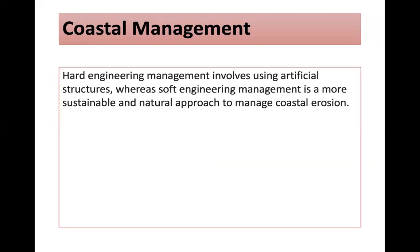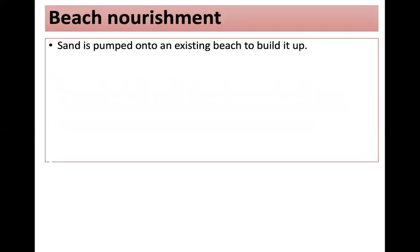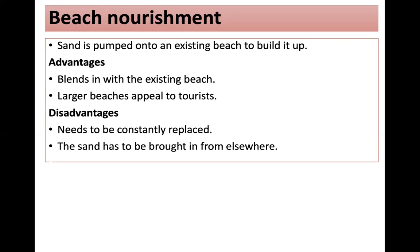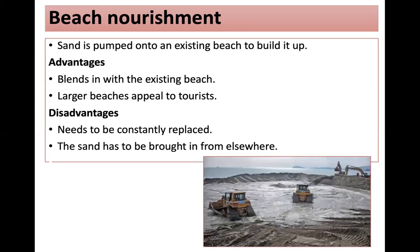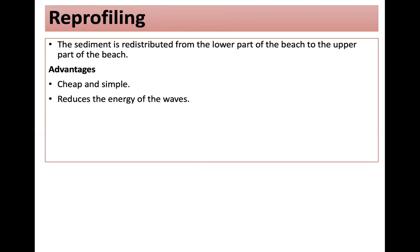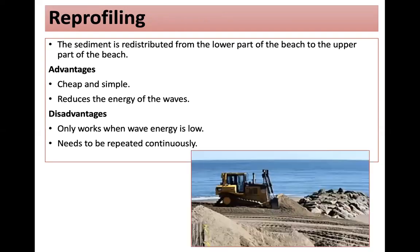Soft engineering is a more sustainable and natural approach to managing coastal erosion that doesn't involve building artificial structures. Beach nourishment is when sand is pumped onto an existing beach to build it up, blending in with the existing beach and appealing to tourists. The disadvantage is it needs to be constantly replaced and sand has to be brought in from elsewhere. Beach reprofiling is when sediment is redistributed from the lower part of the beach to the upper part. It's cheap and simple and reduces the energy of the waves, but it only works when wave energy is low and needs to be repeated continuously.